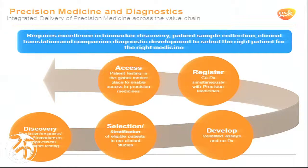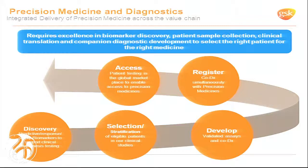To have ideal success in precision medicine, you really have to think end-to-end when considering the drug development paradigm — starting with discovery and identifying those predictive biomarkers, utilizing those to select or stratify patients in clinical studies, developing the validated assays we've been discussing today, and having coincidental registration of both the drug and the diagnostic. A key component is also the access piece — not just having the assay available for patients, but also that the assay is reimbursed.